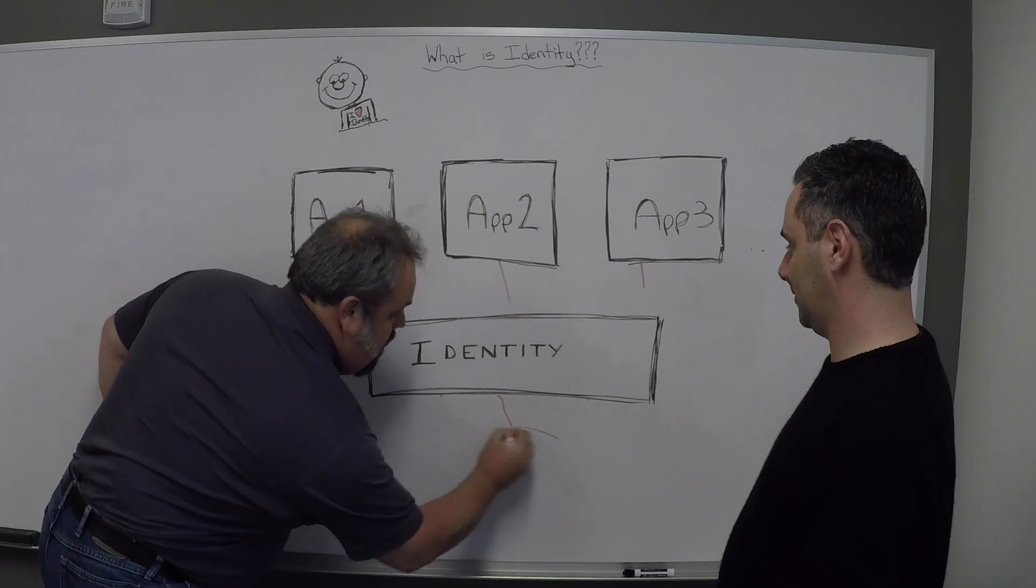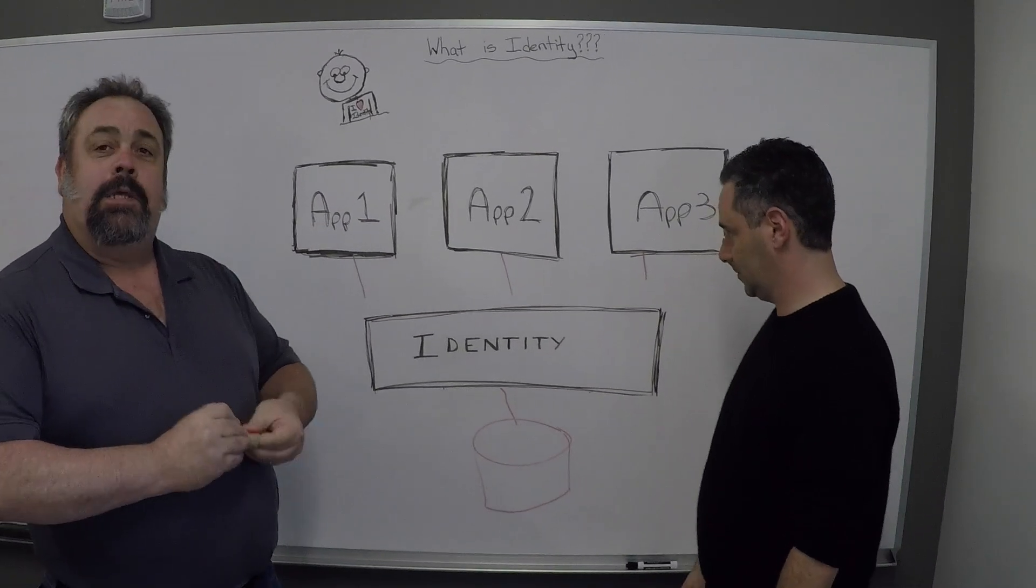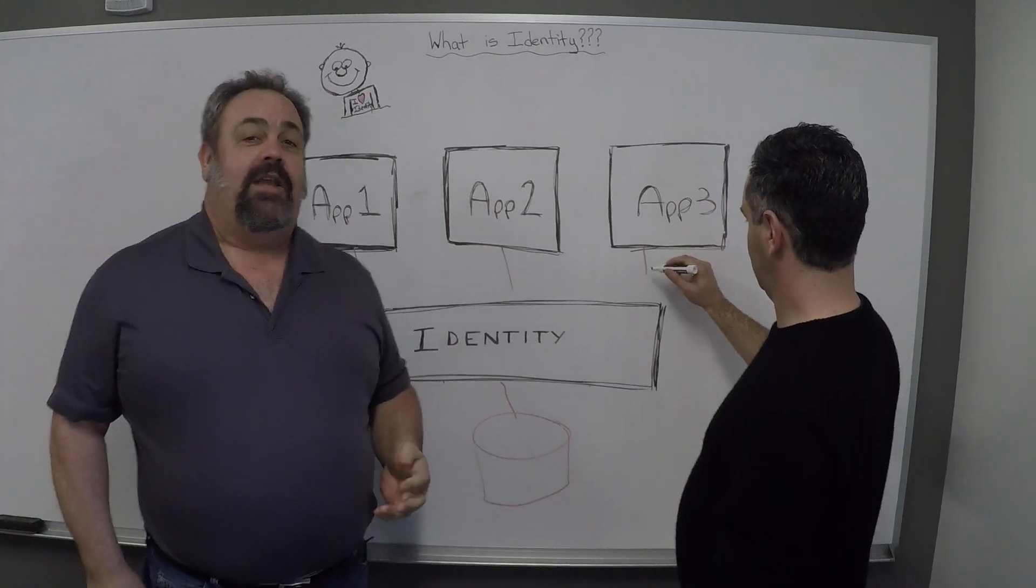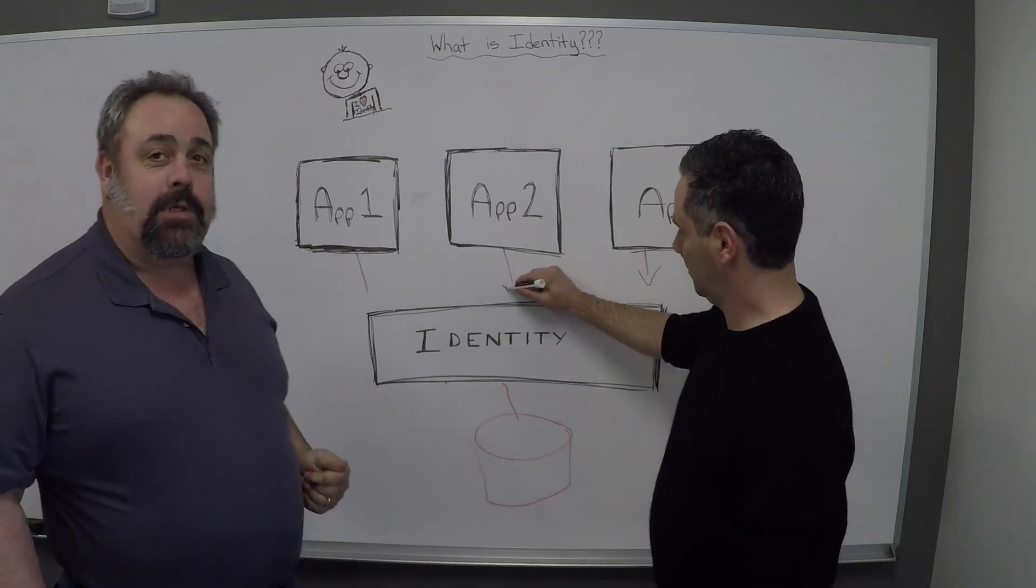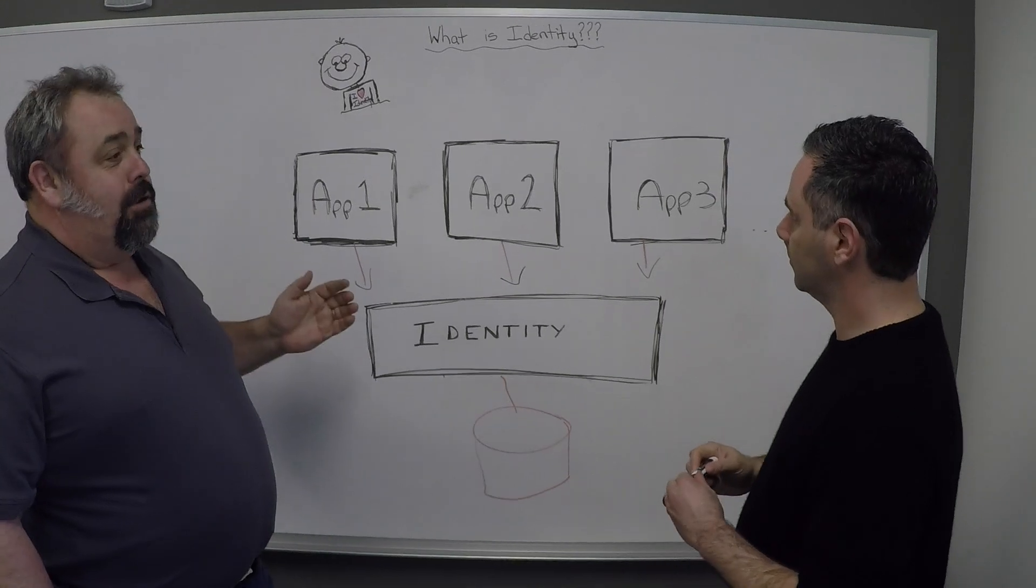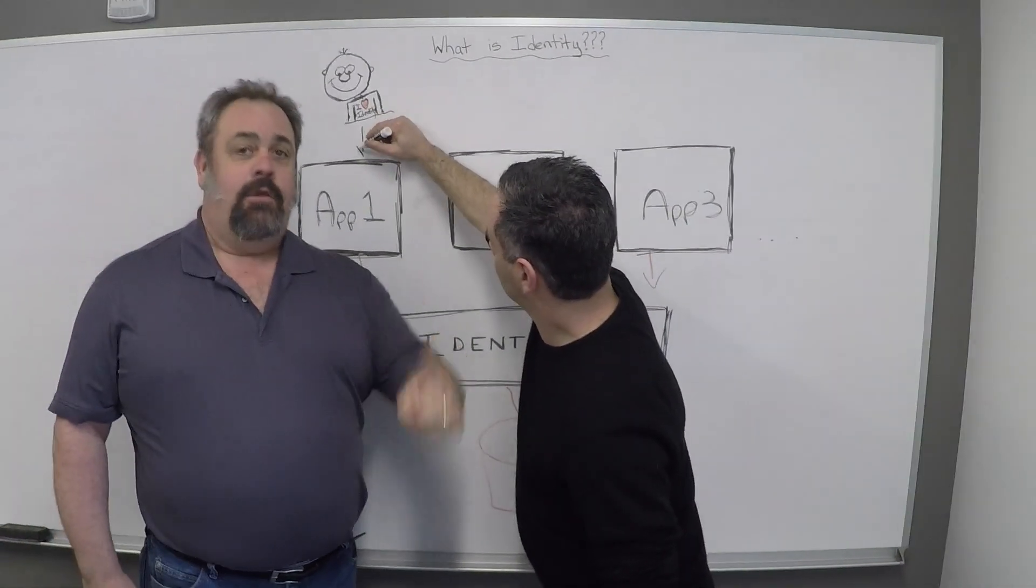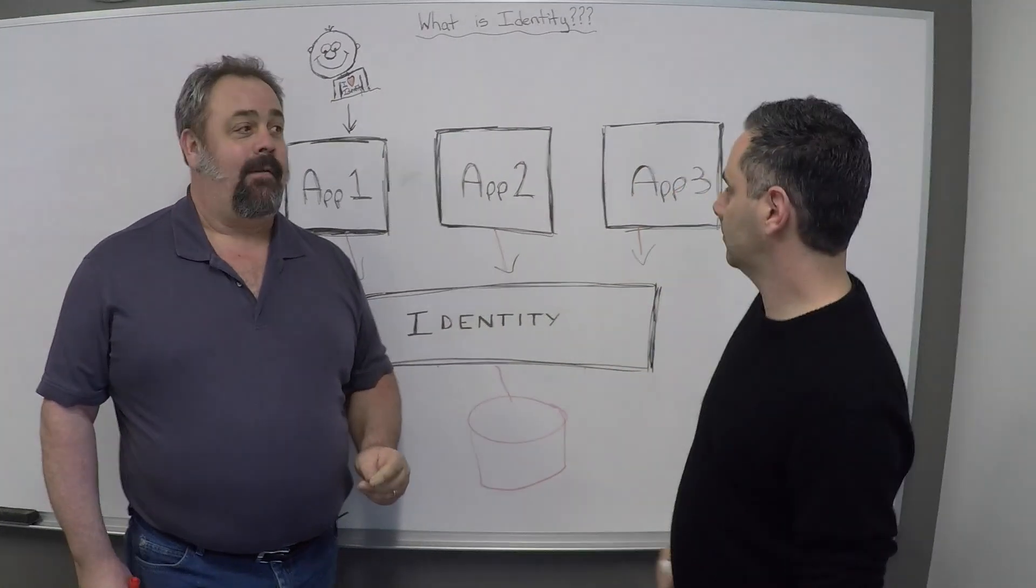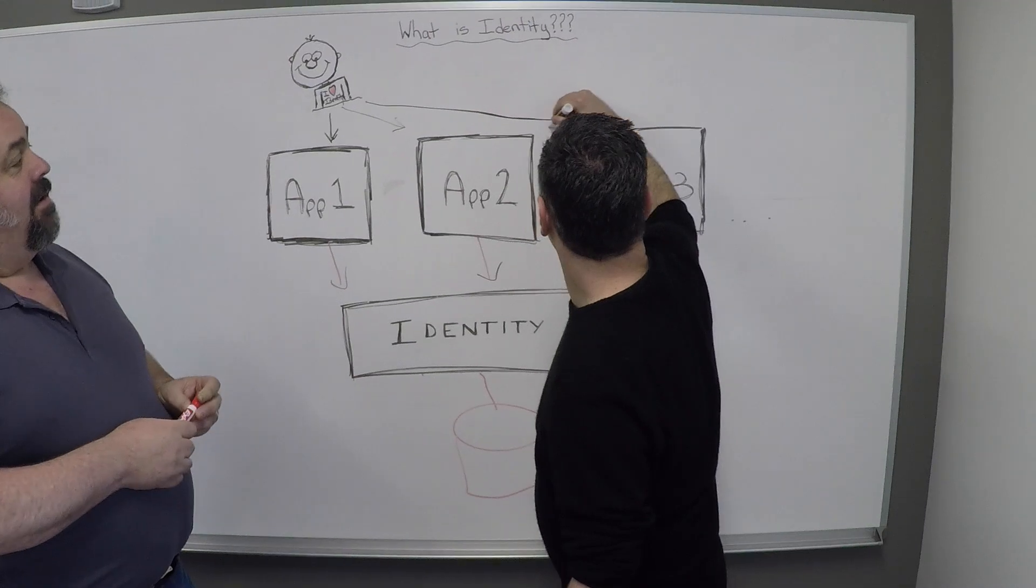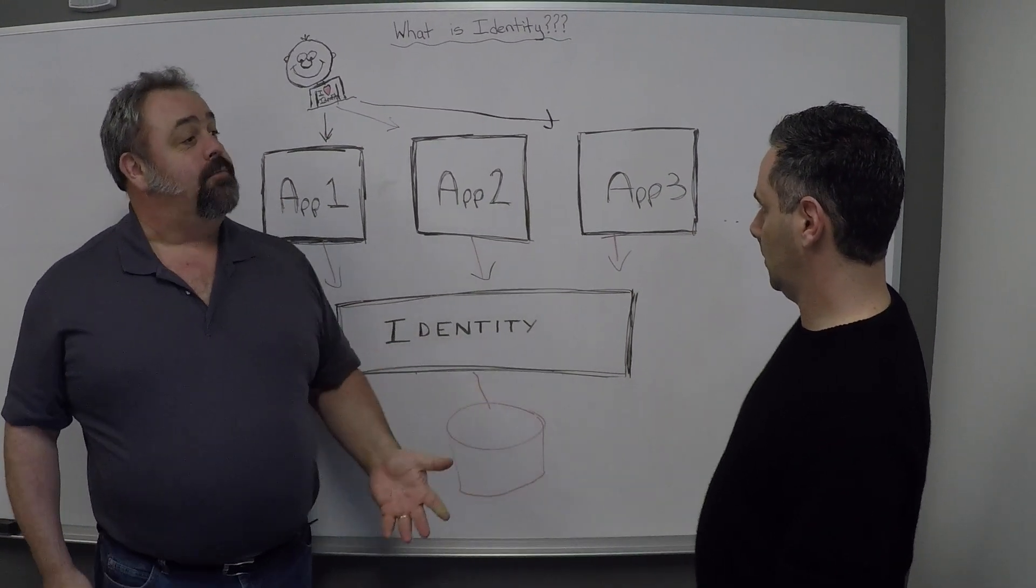So we have one big shared database down here in our identity system so that all of these applications can get the information they need about this one single user. And the really cool part is now this one single user only has to tell the identity system who they are once. And they can access any of these apps. Absolutely. Because they've already told the identity system who they are.